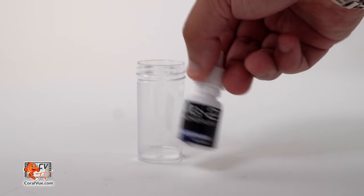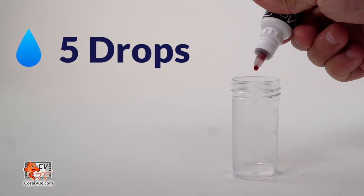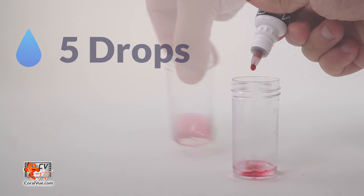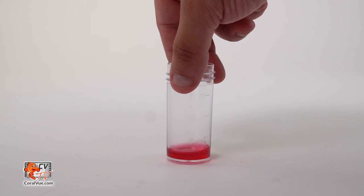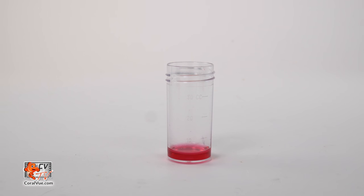Carefully shake the MG2 reagent bottle before use, then add 5 drops to the test vial and swirl for 20 seconds. The sample should become a dark red purple color.